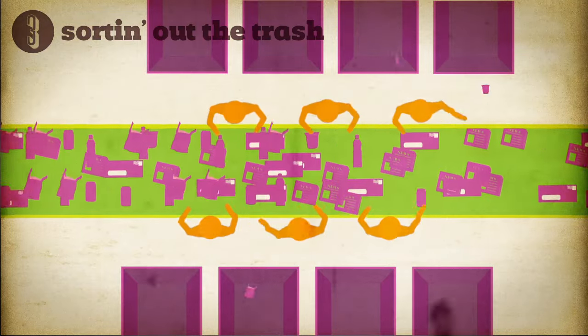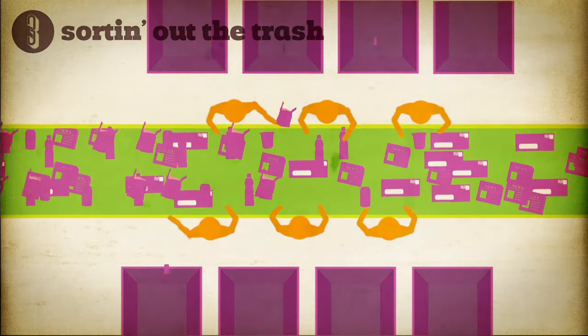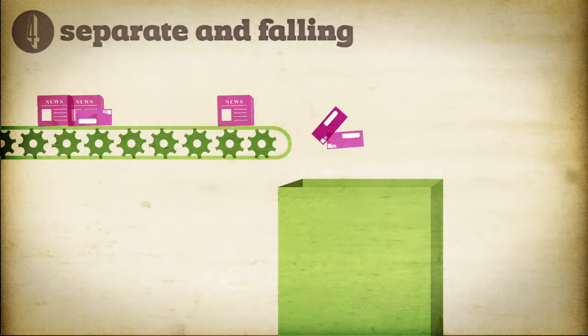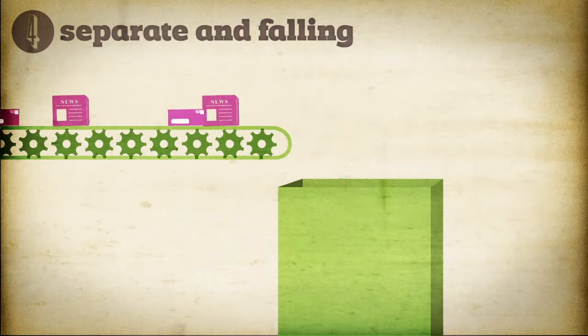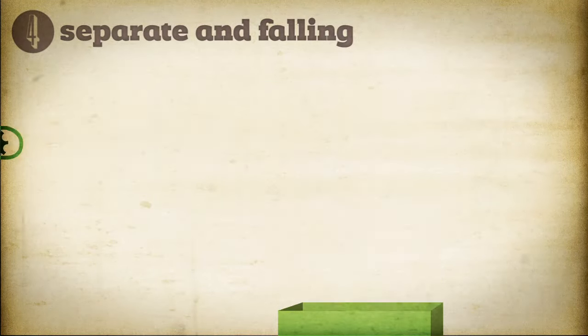This lessens the amount of contamination in the final recycling load. The paper products are dropped into a holding container that waits at the end of the conveyor, then bailed.